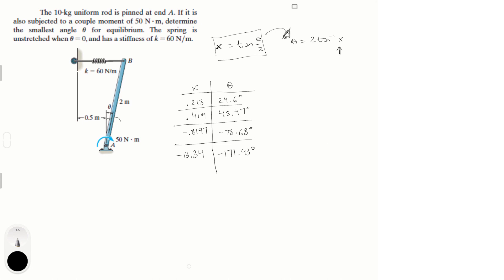Theta is positive going in the direction shown, so it must be between 0 and 90 degrees. That eliminates the negative values. Two valid angles remain for equilibrium: 24.6° and 45.47°. Since we need the smallest angle for equilibrium, the final answer is 24.6 degrees.